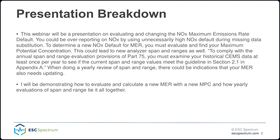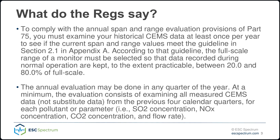Part of having a new analyzer span and range and how that ties into this is you're supposed to be evaluating your span and range every year as part of Part 75. You must examine your historical SIMS data at least once per year to see if the current span and range values meet the guidelines in Section 2.1 in Appendix A. This is a really good indicator if your MER needs updating. If you see that you're not complying with your current span and range, that's when you investigate, look for a new MPC, and then you're probably going to have a new MER because MPC is directly used in the equation for MER. Every year you should be doing a span and range evaluation.